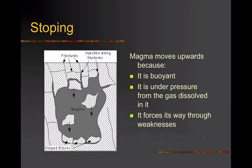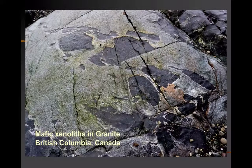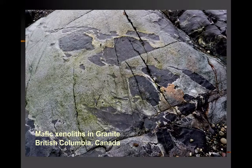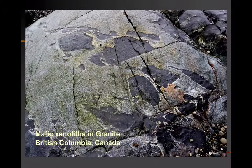We can see evidence of this within exposures that we can find. This is a photograph of a granite outcrop in Canada showing examples of mafic xenoliths. These xenoliths have clearly fallen into the granite and haven't really been changed a great deal by being incorporated into the magma. We can see how the magma is pushing its way into cracks within the xenoliths, but these xenoliths haven't changed shape very much — they're quite angular and look like they've been broken off from the country rock.